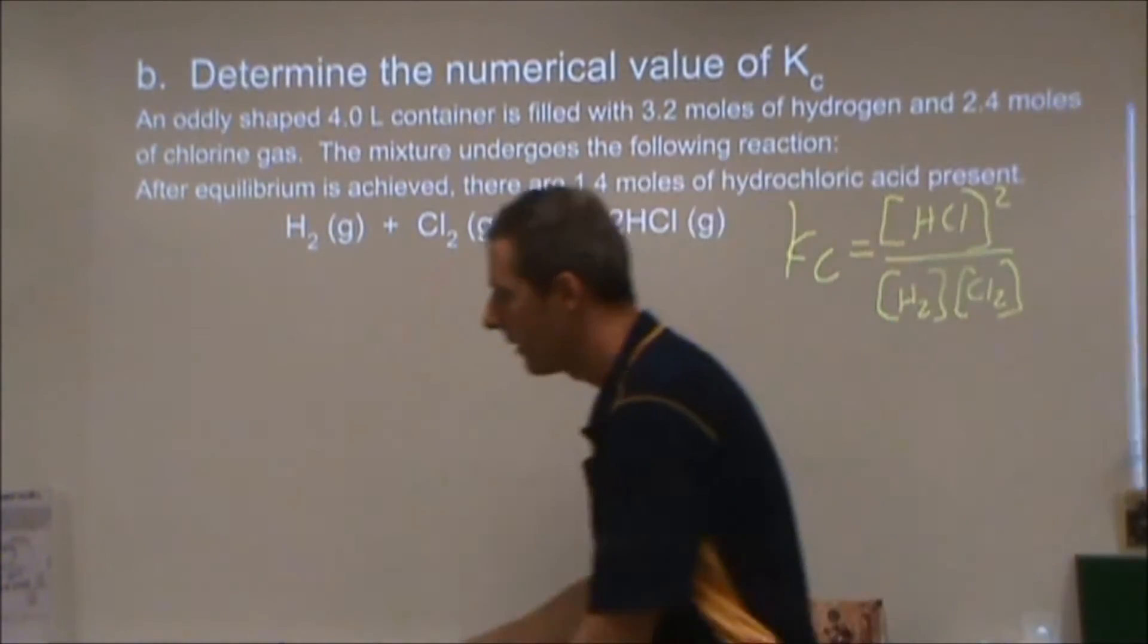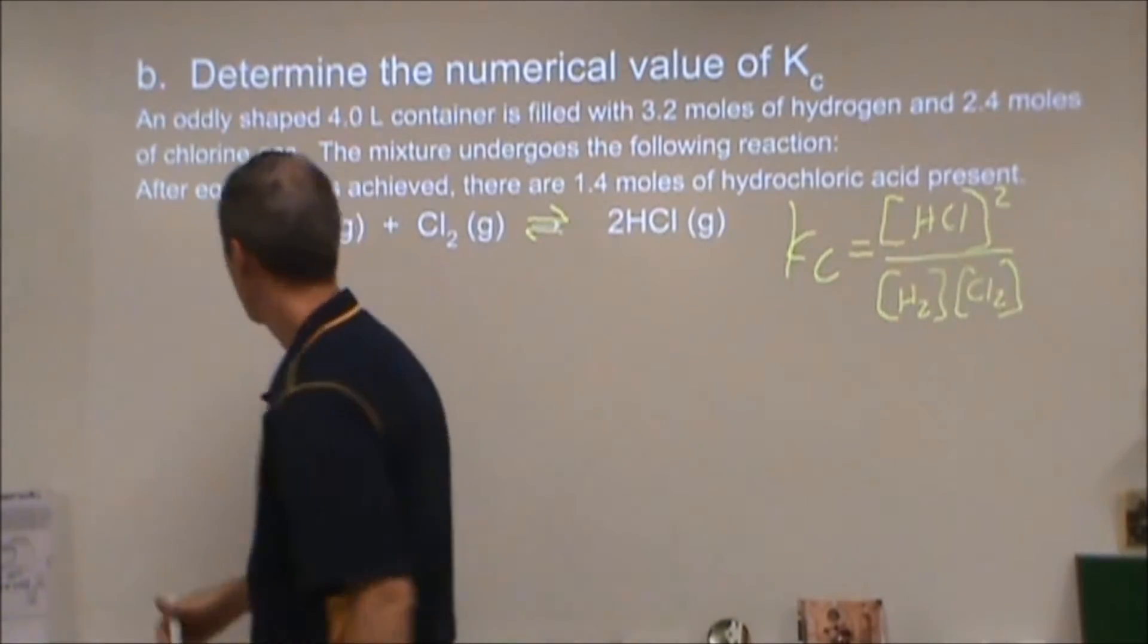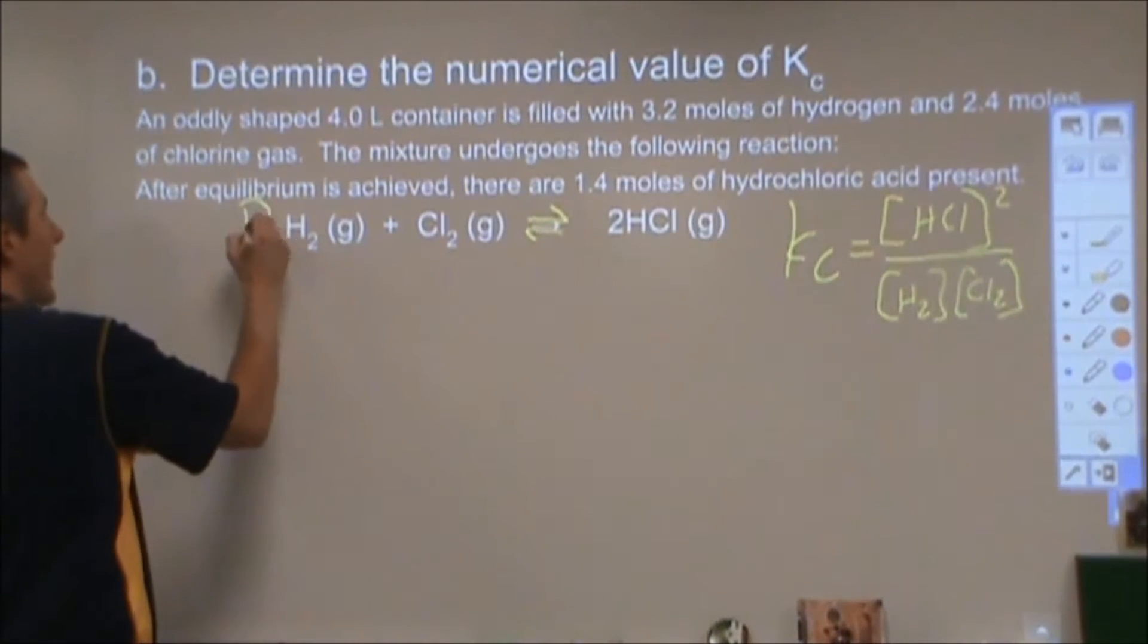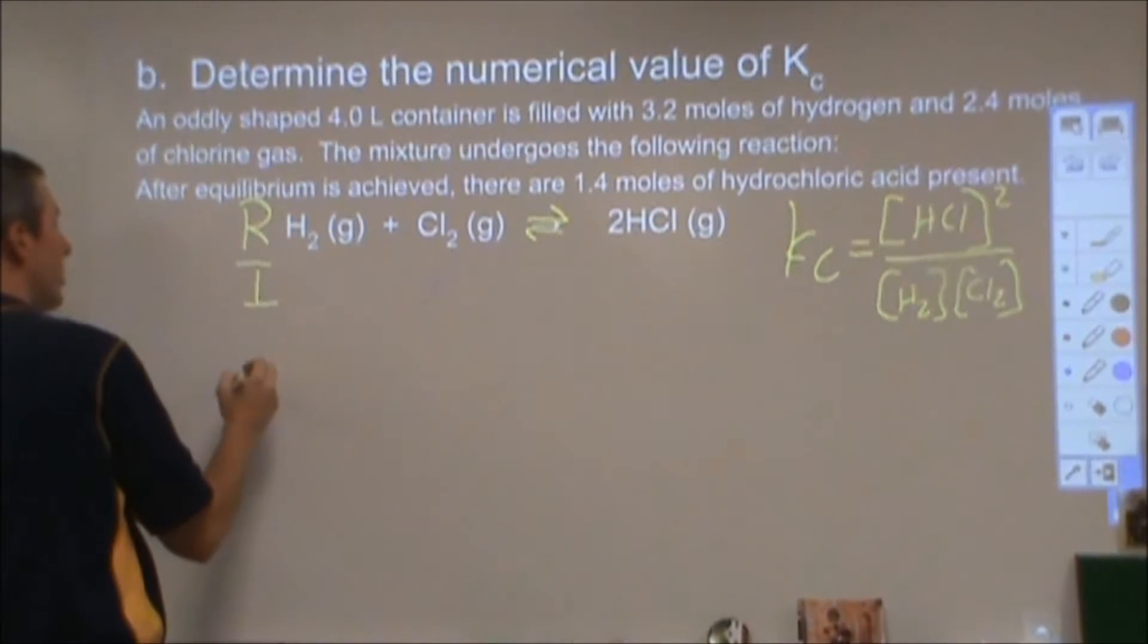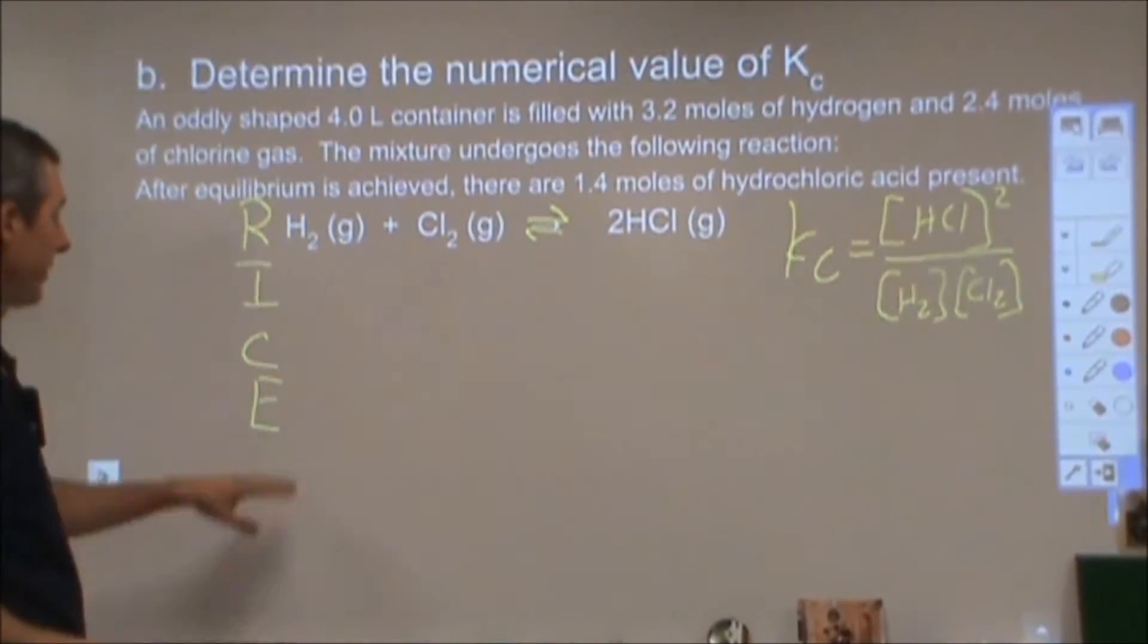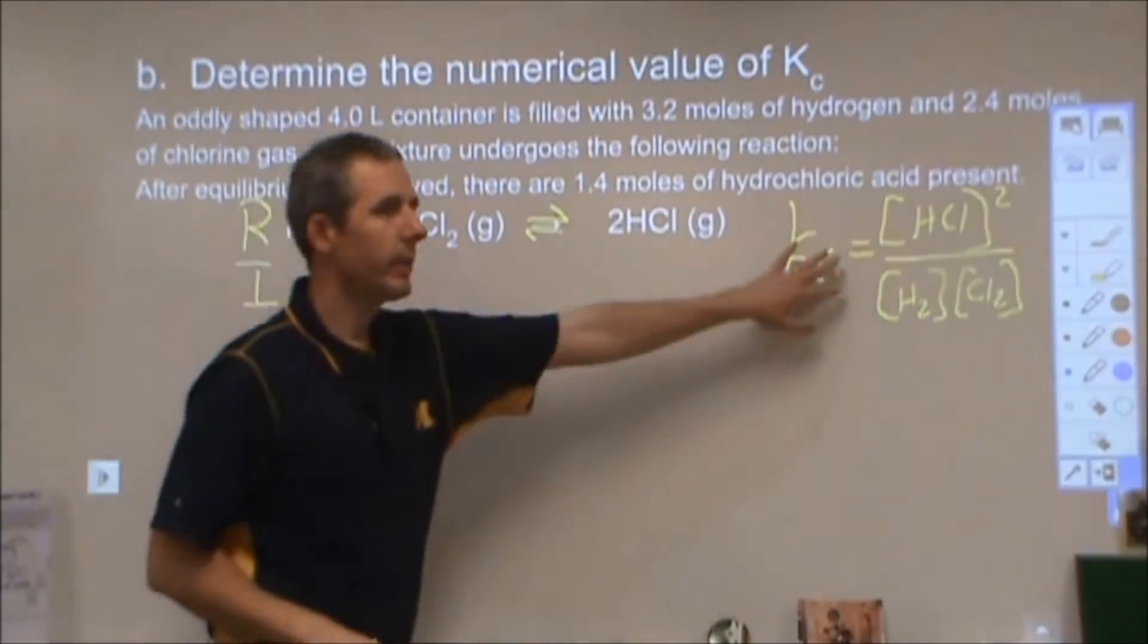So what I'm going to do to figure that out is I'm going to do what's called an ICE chart or a RICE chart where I have the reaction here, the initial amounts, how much they change by, and the equilibrium amounts. This is what I want to know to plug into this expression.